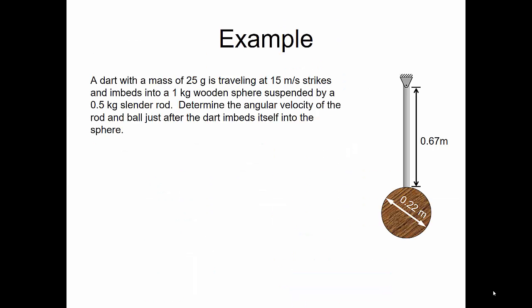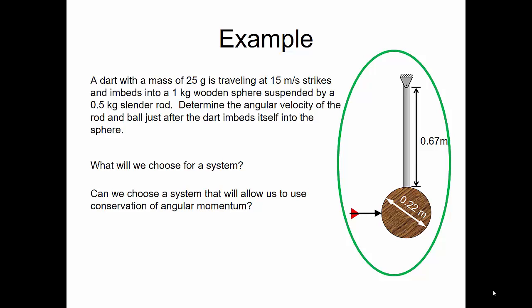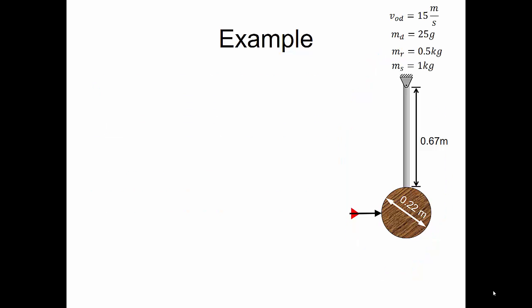Here's another example. Let's say I have a dart with a mass of 25 grams traveling at 15 meters per second, and it strikes and embeds into a 1-kilogram wooden sphere suspended by a 0.5-kilogram slender rod. We want to find the angular velocity of the rod and ball just after the dart embeds itself into the sphere. The length of the rod is 0.67 meters and the diameter of the sphere is 0.22 meters. We want to choose a system that allows us to use conservation of angular momentum. The initial velocity of the dart is 15 m/s, the mass of the dart is 25 grams, the mass of the rod is 0.5 kg, and the mass of the sphere is 1 kg.